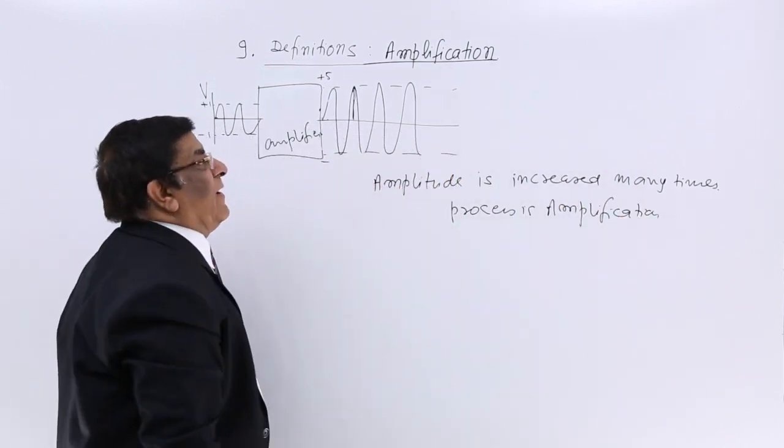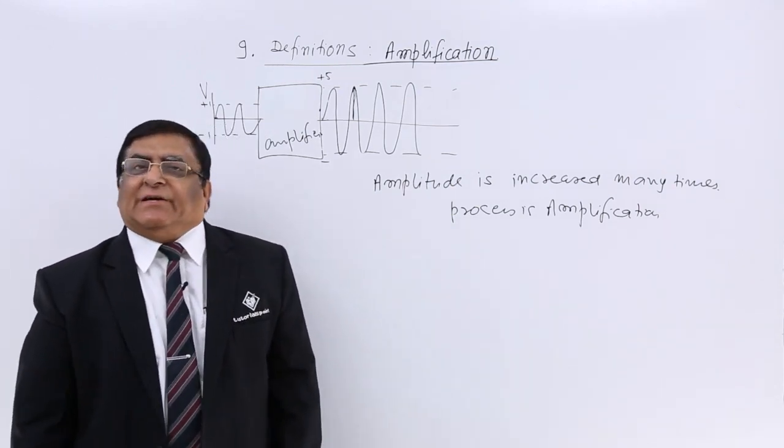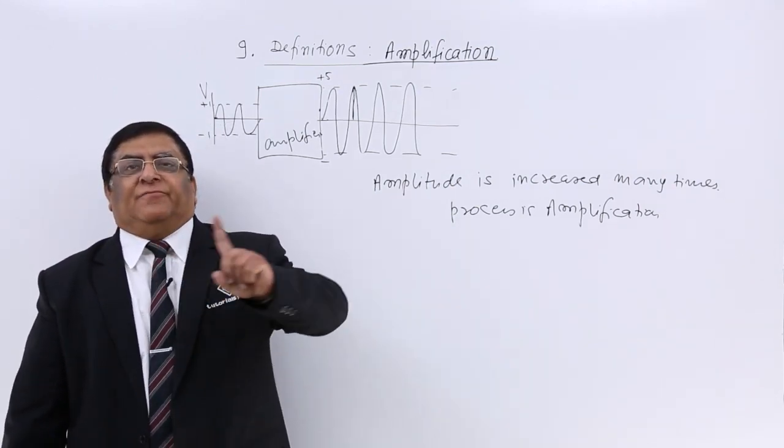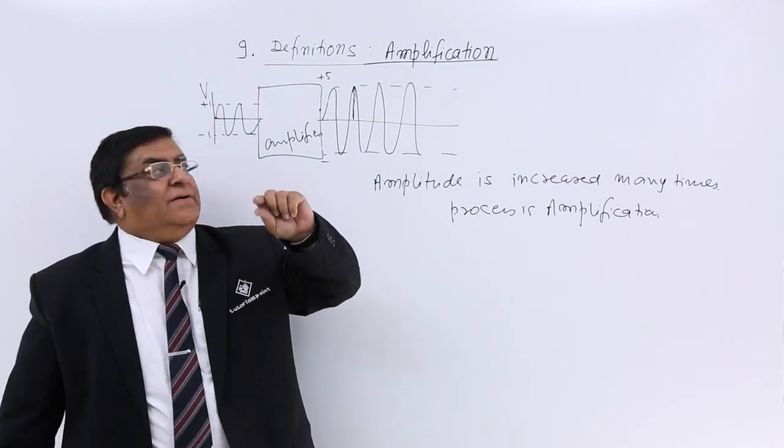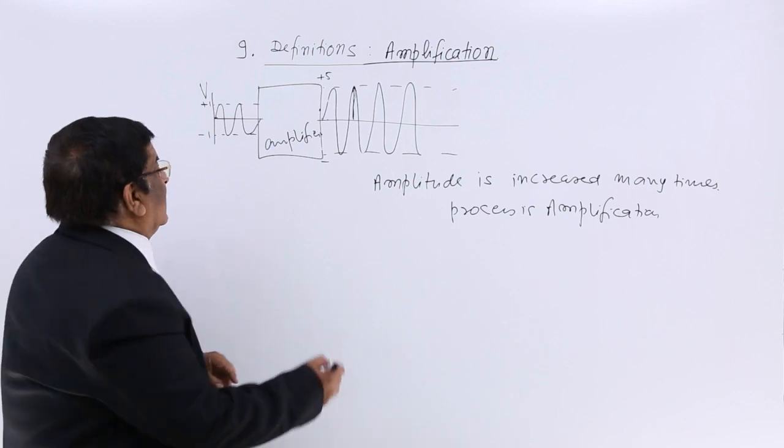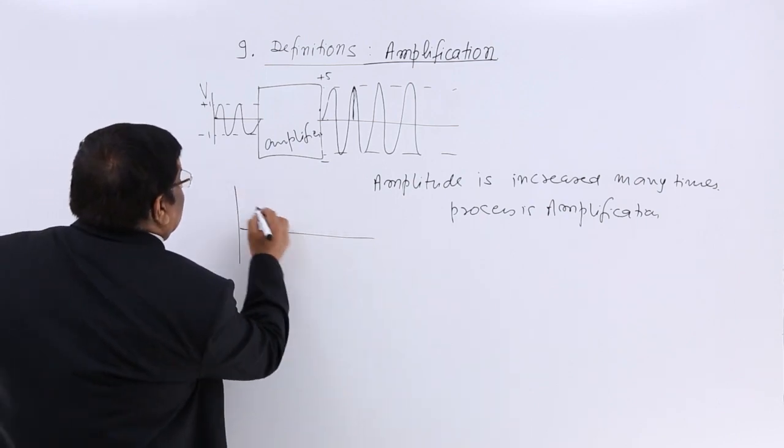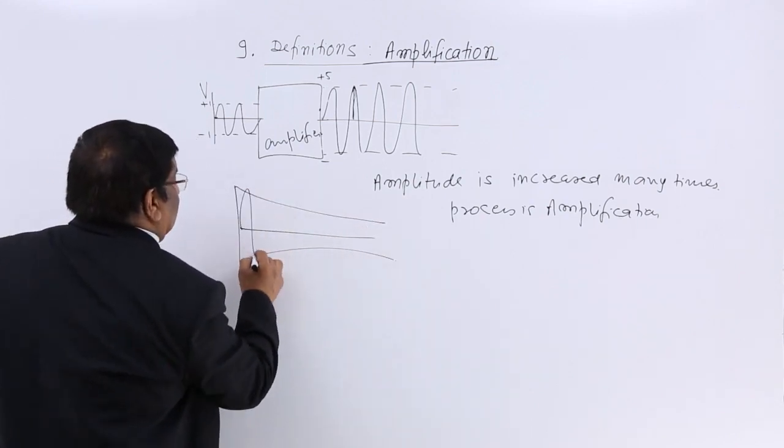And it is required, very much required in our communication system because whenever a wave travels, after a few kilometers, it gets weak. This amplitude becomes less and this we have already discussed that it will become like this.